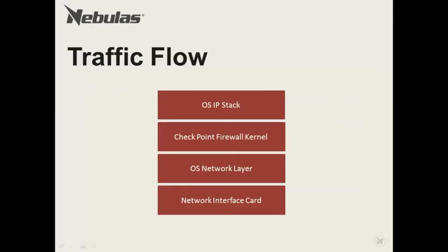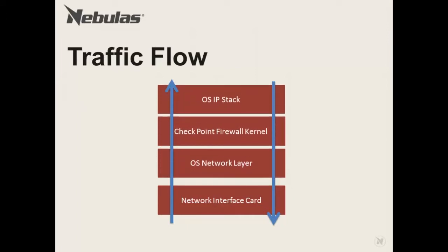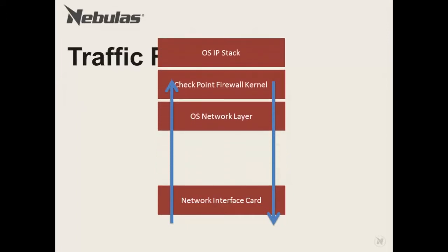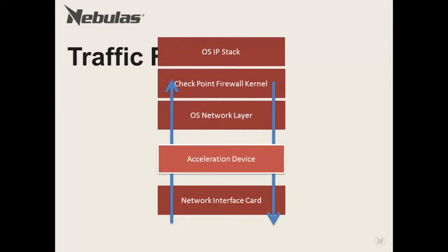The CheckPoint firewall kernel is placed between the network and host operating system's IP stack. Traffic traverses the firewall kernel before being routed by the host OS. With SecureXL enabled, an acceleration device is placed between a network interface card and before the firewall kernel. Any traffic eligible for acceleration is sent straight back out of the network without the need to traverse the firewall kernel.